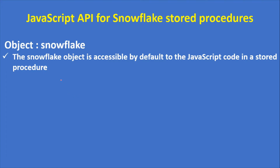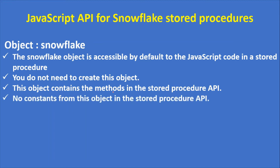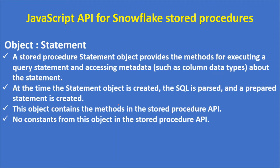The Snowflake object is accessible by default to the JavaScript code in a stored procedure — that means you do not need to create this object. This object contains the methods in the stored procedure API. There are no constants from the Snowflake object, only methods.